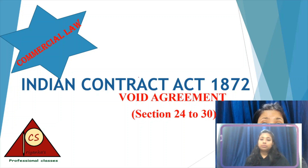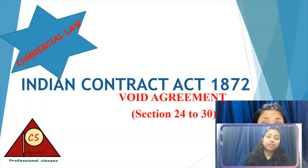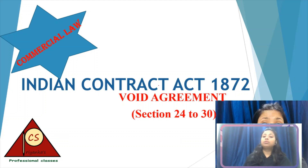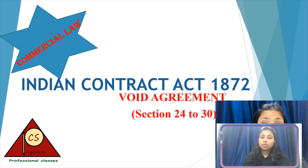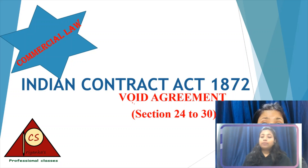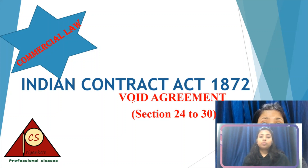Under the first video on important definitions, we saw that an agreement can be only of one type — a void agreement. Void means totally invalid and illegal. In this video I will explain some of the situations which are coming under void agreement as per section 24 to 30.